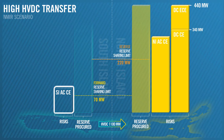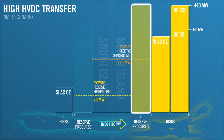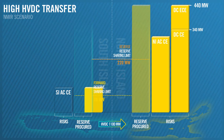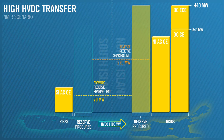Let's look at the South Island. We have already procured 440 megawatts of FUR from the North Island, 220 megawatts of which can be shared to the South Island. This is enough to cover the 100 megawatts of FUR required, even accounting for losses and the effectiveness factor. Therefore, no FUR is procured in the South Island.